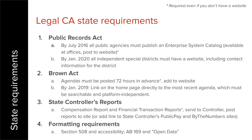It might feel a little overwhelming when you think about all the things you have to have on a website in California, especially if you haven't already had one, and especially now with SB929 having passed saying you have to have one. I wanted to note how much of this you're already doing. Even if you don't have a website, you already have to post your enterprise system catalog and keep it available wherever you meet. You already have to post your agendas in advance and do the state controller reports. The formatting requirements are in addition, and there are a few other things we'll go over.